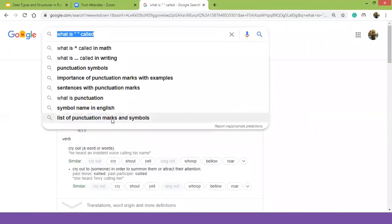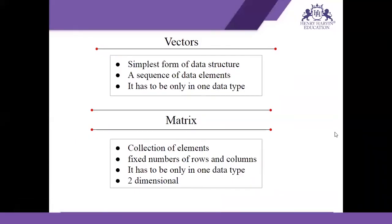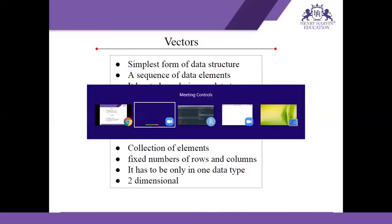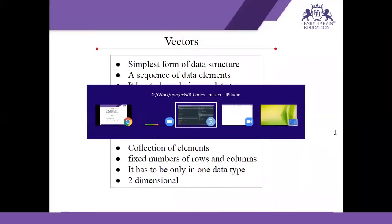Next is matrix. A matrix is a collection of elements with a fixed number of rows and columns, giving it a two-dimensional data structure. However, the entire matrix must contain only one data type — all values must be either numeric, character, logical, or any other single type.